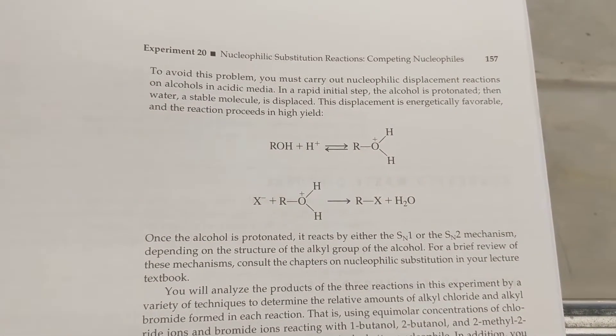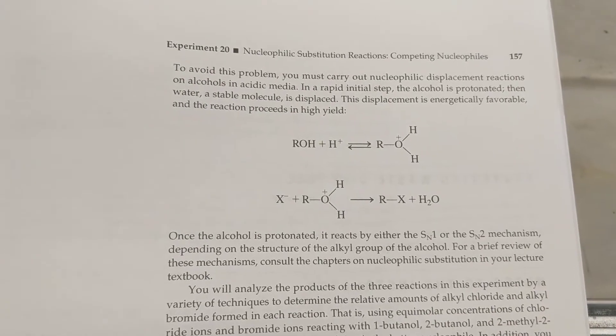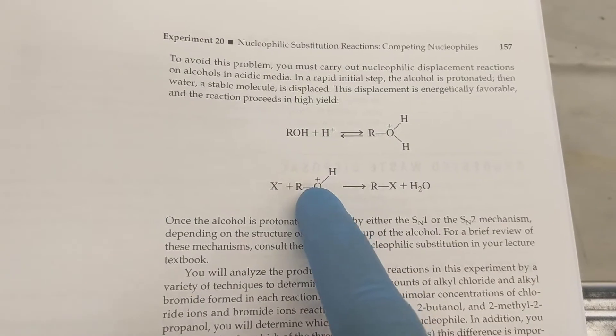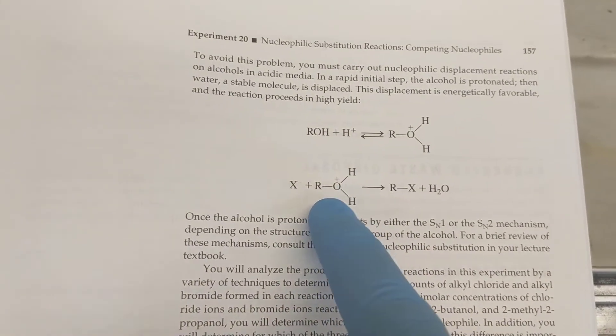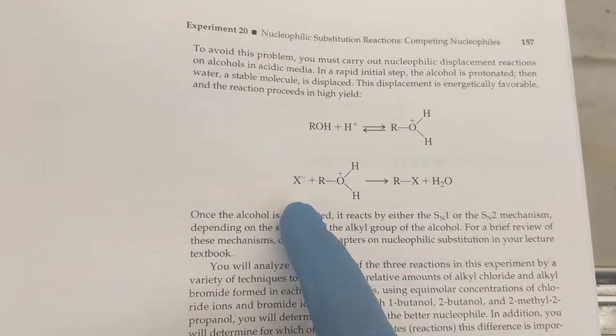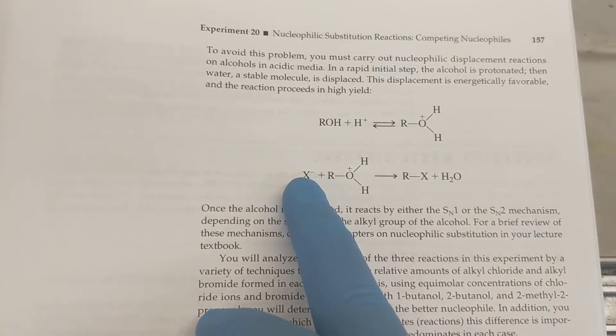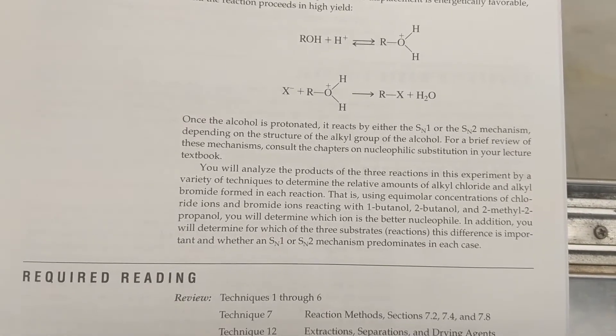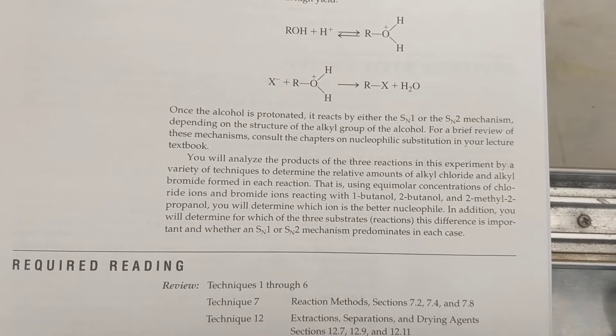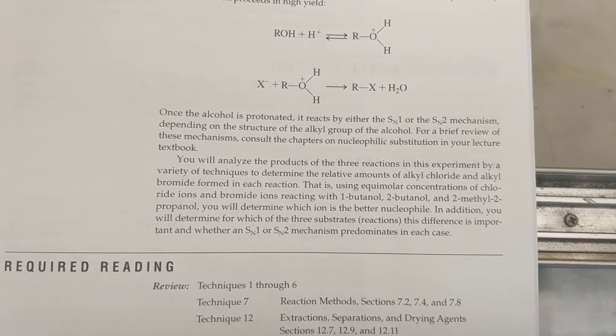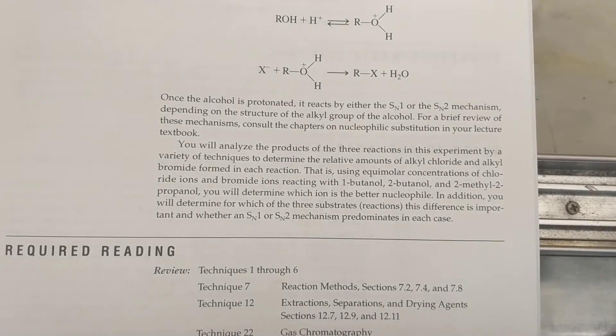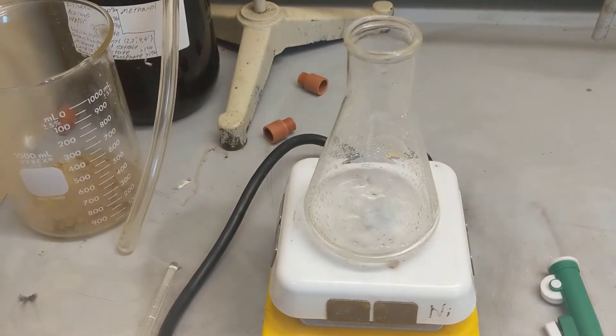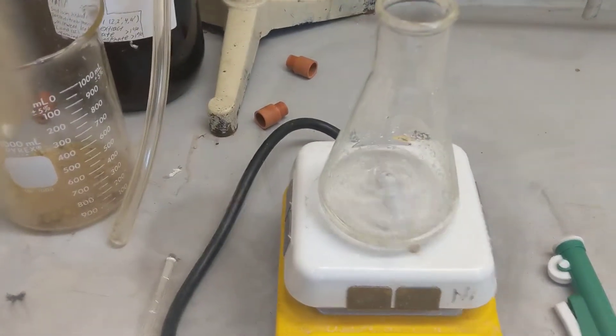This displacement is energetically favorable because water is very stable and the reaction has a high yield. You can see here you add a proton to that hydroxide, making a stable leaving group so that this nucleophile can then attack. Once alcohol is protonated, it reacts with either SN1 or SN2 mechanism depending on the structure of the alkyl alcohol.